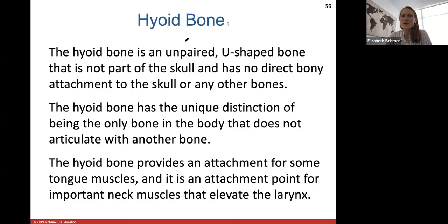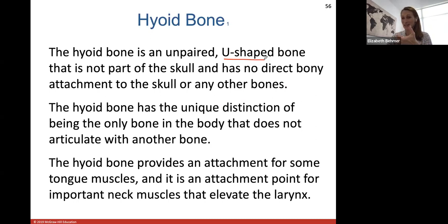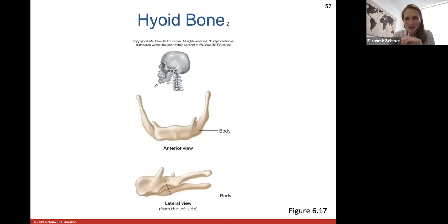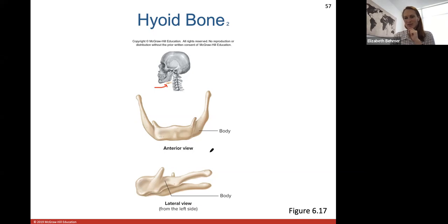The hyoid bone is an unpaired, U-shaped bone that is not part of the skull. It has no direct bony attachment to any other bone — it is the only bone in the body that does not articulate with another bone. It provides attachment for tongue muscles and important neck muscles that help elevate the larynx during swallowing, and is connected only by muscles and ligaments.